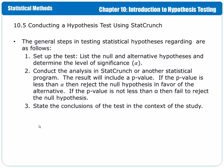We can't have our false positive or our false negative rate set at 0, so we have to find some kind of a happy balancing point where the false positive rate is maybe 5%, which then means that the false negative rate is going to be some value that is greater than 0 but not too big. A typical significance level is 5% because that means we're going to have a 95% accurate test. Next, we conduct the analysis in StatCrunch or another statistical program. The result will include a value that is called a p-value.